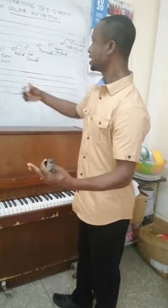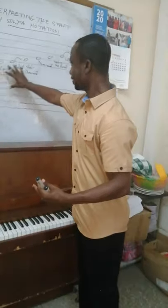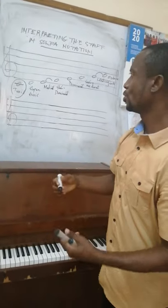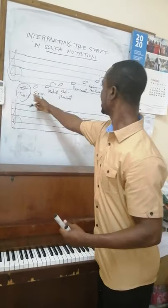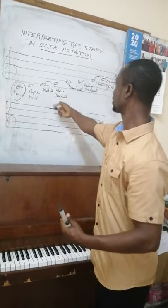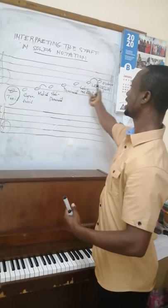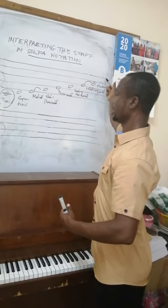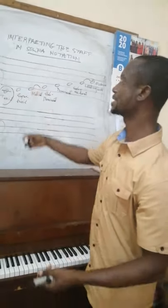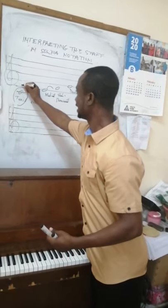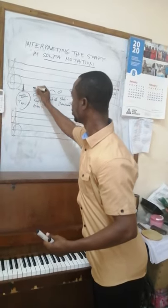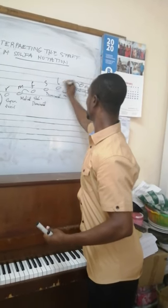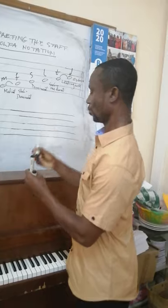In interpreting the staff in solfège notation, we need to know that the scale degrees — tonic, supertonic, mediant, subdominant, dominant, submediant, leading note, and octave — are also expressed in solfège as: do, re, mi, fa, so, la, ti, and then do.